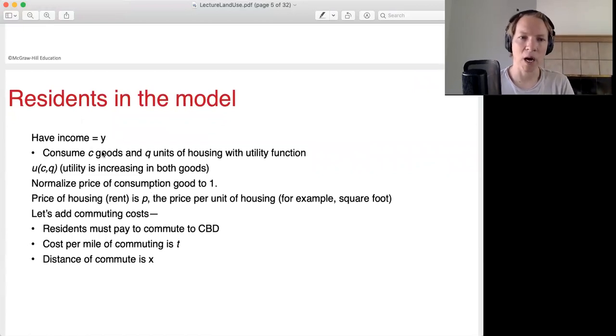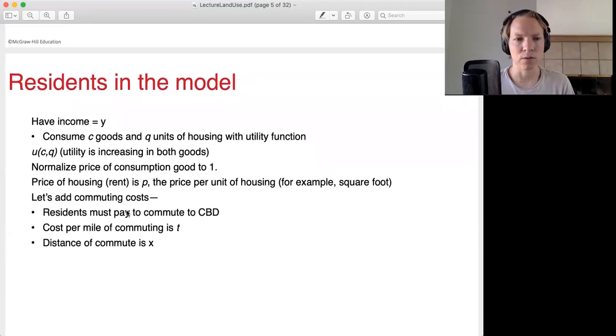Everybody has the same income, which we're going to denote as Y. And basically you consume C, which is your consumption and Q, which is your housing. So the more Q you have, the more housing, bigger house, bigger square footage, that sort of thing. We're going to normalize the price of consumption to one. This is often done in econ models. One of the prices is usually normalized to one. And then you could think of all the other prices as being relative to that price. So the price of consumption is one. Therefore, the price of rent is P.